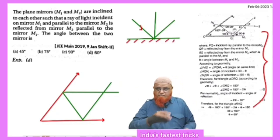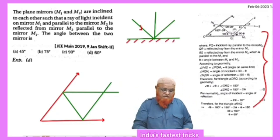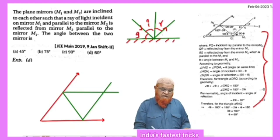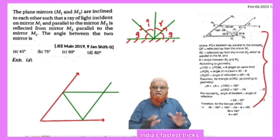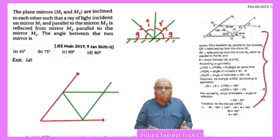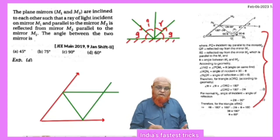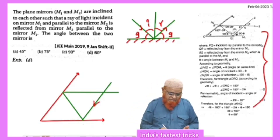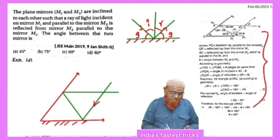A light ray will enter, strike the mirror, and get reflected back. You all know angle of incidence is equal to angle of reflection. Similarly, the glancing angle on this side and the glancing angle on this side are both going to be the same. Light ray enters and falls on one mirror, then strikes a second mirror.